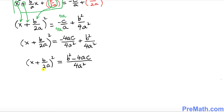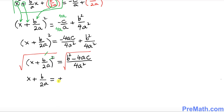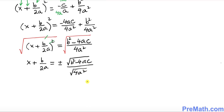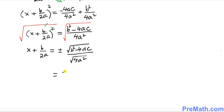Now I want to get rid of this square because we want to solve for x. So take the square root on both sides. The square and square root undo each other on the left. We end up with x plus b over 2a equals positive or negative the square root of the numerator, b squared minus 4ac, divided by the square root of 4a squared. The square root of 4a squared is simply 2a.